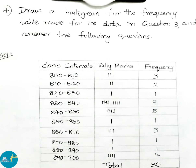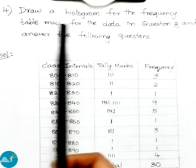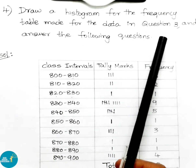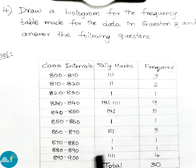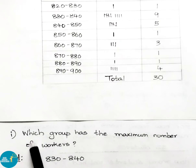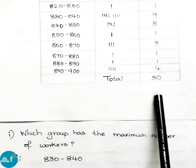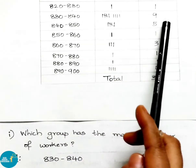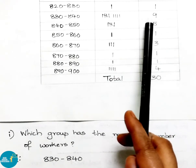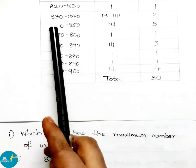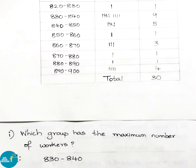Question number 4. Draw a histogram for the frequency table made for the data in question 3 and answer the following questions using that table. Question 1: which group has the maximum number of workers? Observing the frequency distribution table, the highest value is 9, which belongs to the group 830–840. So the answer is: the 830–840 group has the maximum number of workers.